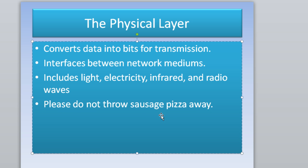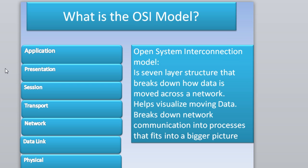Here's how the mnemonic maps to the layers: 'Please' is the Physical layer, 'Do' is the Data Link layer, 'Not' is the Network layer, 'Throw' is the Transport layer, 'Sausage' is the Session layer, 'Pizza' is the Presentation layer, and 'Away' is the Application layer. That's your trick to remember the OSI model layers. That's basically it for this tutorial — next time we'll be covering the Data Link layer. This is the IT Ranger — don't forget to subscribe, and I'll catch you guys next time.